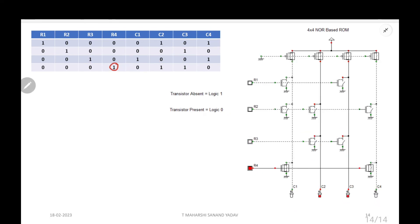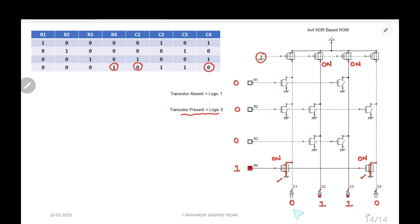For R4: take R4 as 1 and remaining rows as 0. According to the truth table, C1 and C4 are 0s, so active transistors are present at C1 and C4 cross points. Because R4 is 1, those transistors turn ON and are pulled to GND, giving output 0 along those lines. The PMOS transistors for C2 and C3 are always ON (connected to GND input giving 0 to PMOS), pulling those lines to VDD (logic 1). Output is 0, 1, 1, 0 — same as the truth table. If you take different combinations, the presence of active transistors will differ accordingly.